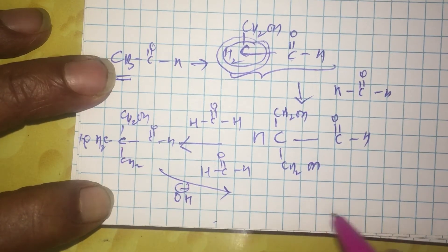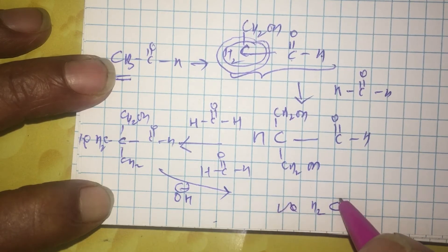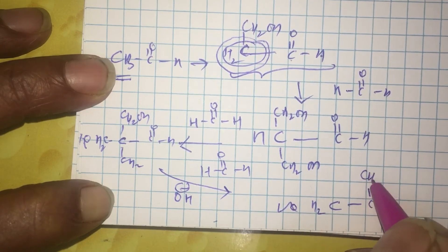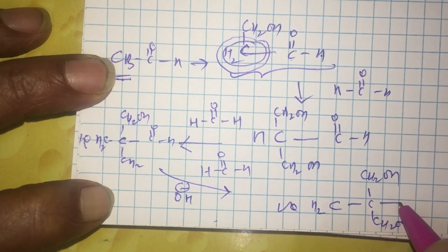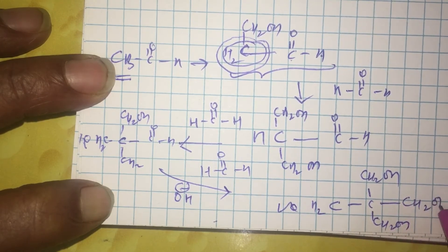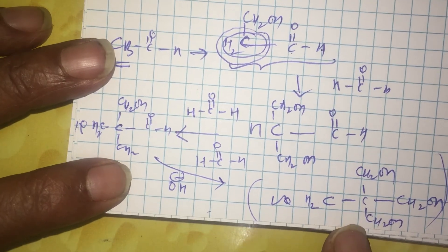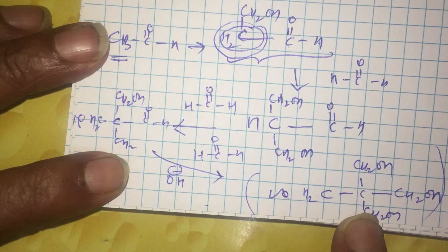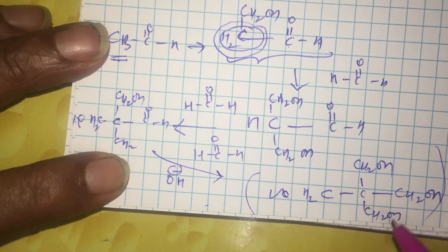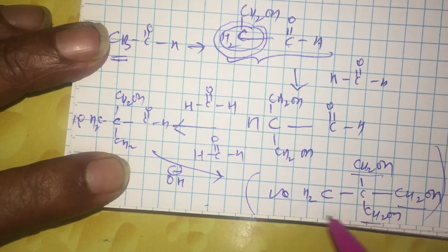Due to Cannizzaro reaction, this can further undergo a reduction to give you CH2OH, CH2OH, CH2OH, and this becomes CH2OH. This particular product known as pentaerythritol is interesting and it is something like methane where four hydrogens are replaced by CH2OH groups.